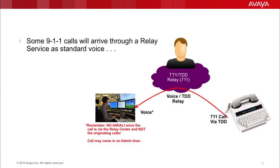Some 911 calls from deaf callers will arrive through a relay service as standard voice. You have to remember a few important things. The call is from the relay service and not the original caller. This can create some confusion, as the call may or may not have the ANI of the originating caller, and the call may come into your center on an administrative phone line. Based on the configuration of your center and the CAD, this may not provide an ANI/ALI display, or the ANI/ALI that's displayed may be that of the relay center.